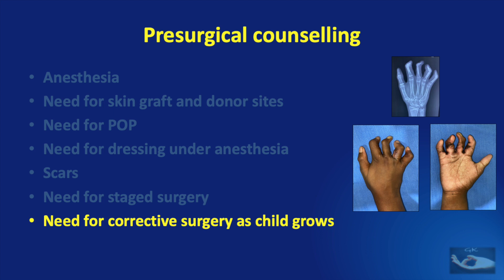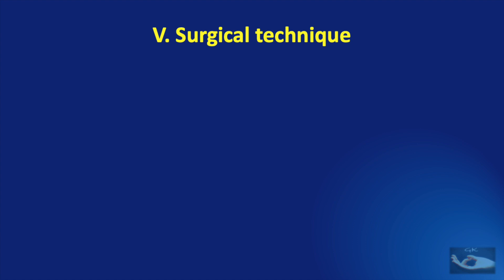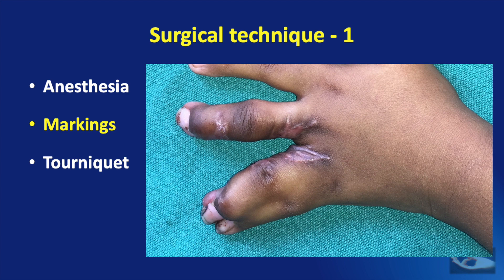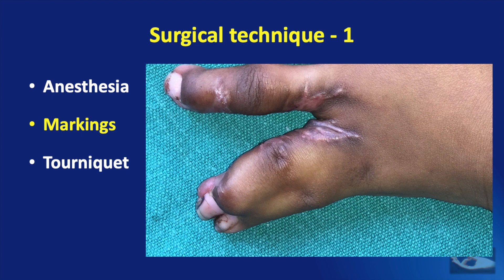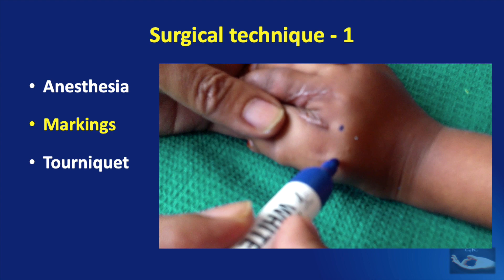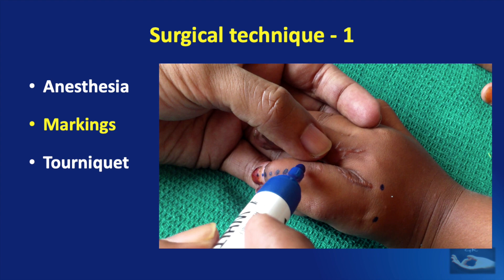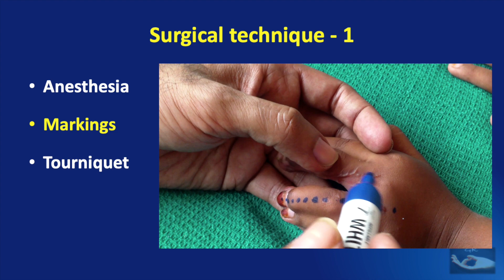Coming to the surgical technique, we shall go through the different steps in the order that they are done. First is anesthesia — a comfortable anesthesia is very important to a good surgery. Now we shall see the markings for the syndactyly release on the left hand of this child, for syndactyly release between the ring and little fingers. The first point is the MCP joint of the fingers — draw the point on the MCP joint. Then draw the mid-dorsal axis, keeping palpating where the bone is.